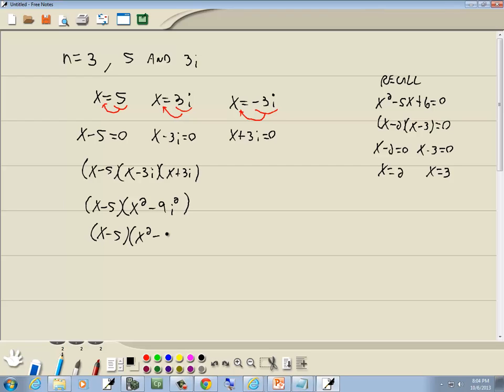Now remember, when you have an i squared, that's the same as negative 1. So this becomes x minus 5 times x squared plus 9.